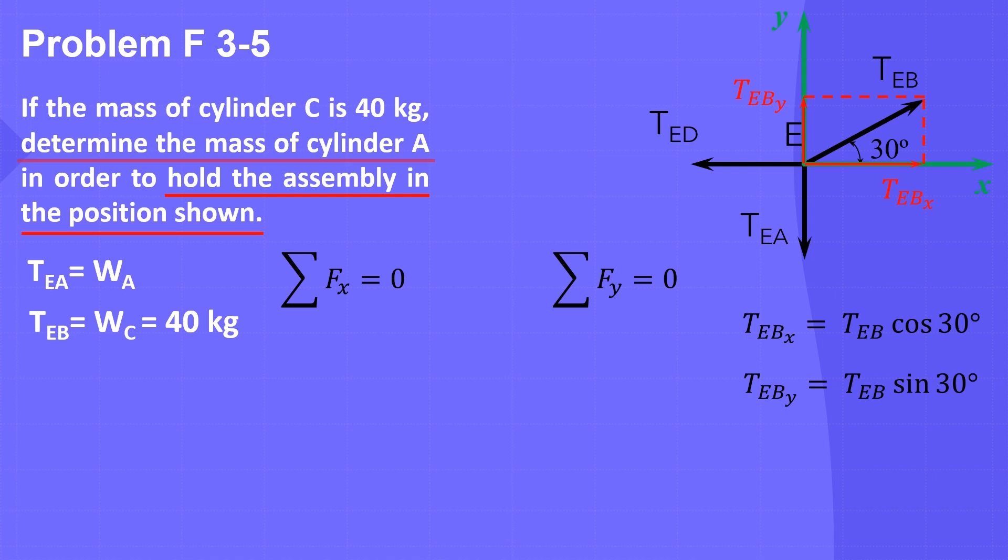Since it is required to determine the mass of cylinder A, or TEA, that is in the vertical direction, I will use the equation ΣFy = 0. We have only two forces in the y direction: TEBy in the positive y direction and TEA in the negative y direction.